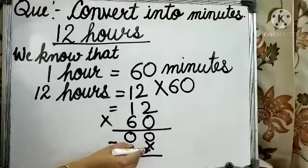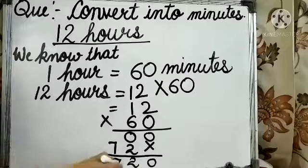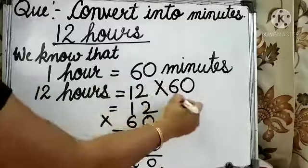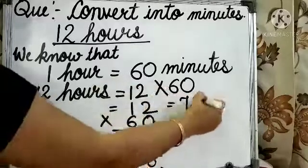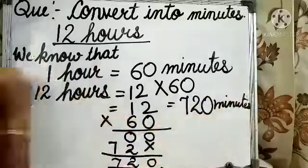0 plus cross means 0. 0 plus 2 is 2. And here is only 7. So, our answer is 720 minutes.